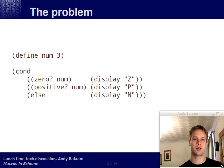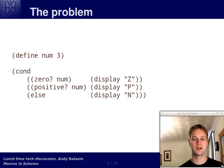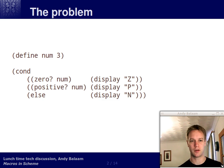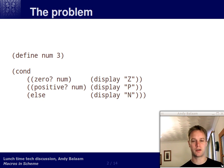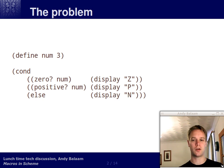Here's our problem. Imagine we have a number called 'num', and in lots of places in our code we want to do something different depending on whether that number is zero, positive, or negative. We might write code like this cond expression at the bottom, which says if it's zero do one thing, if it's positive do another, if it's negative do another. The things we're doing here is printing out Z, P, or N — but it could be anything.